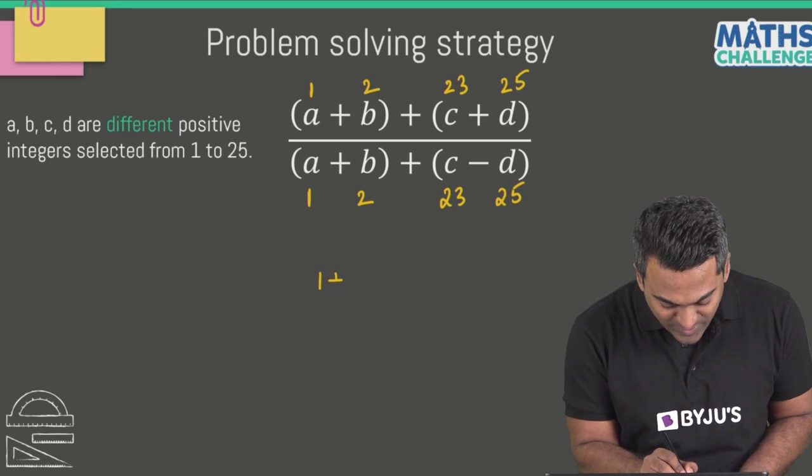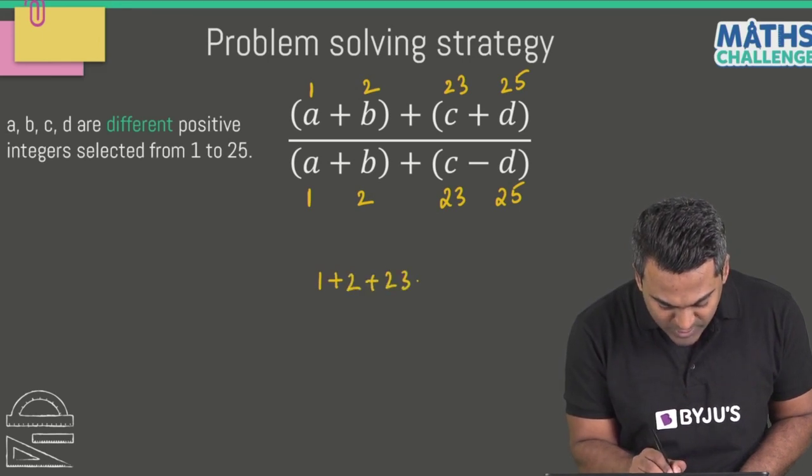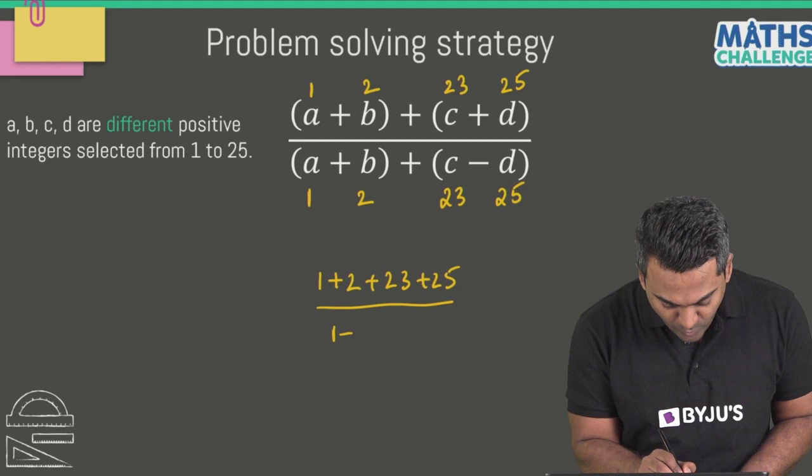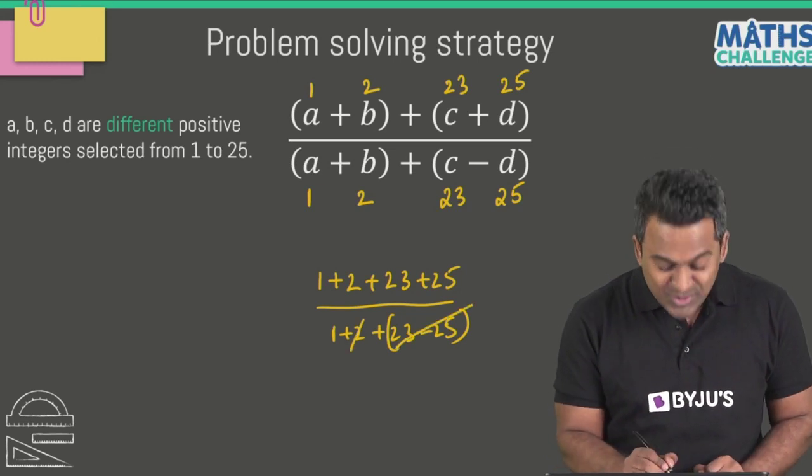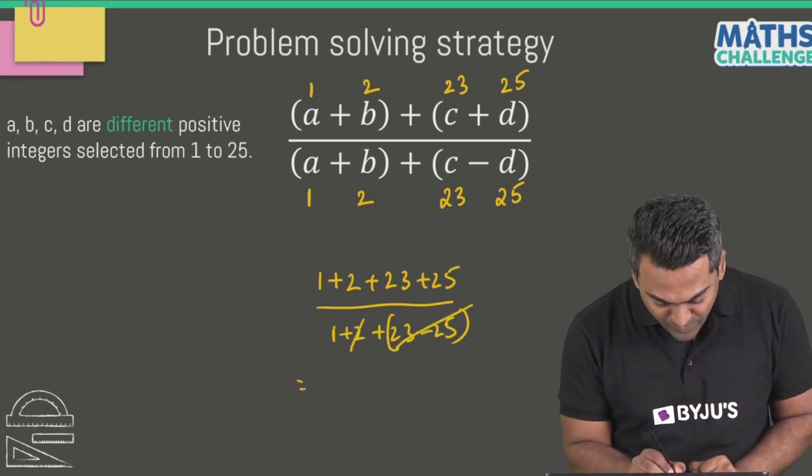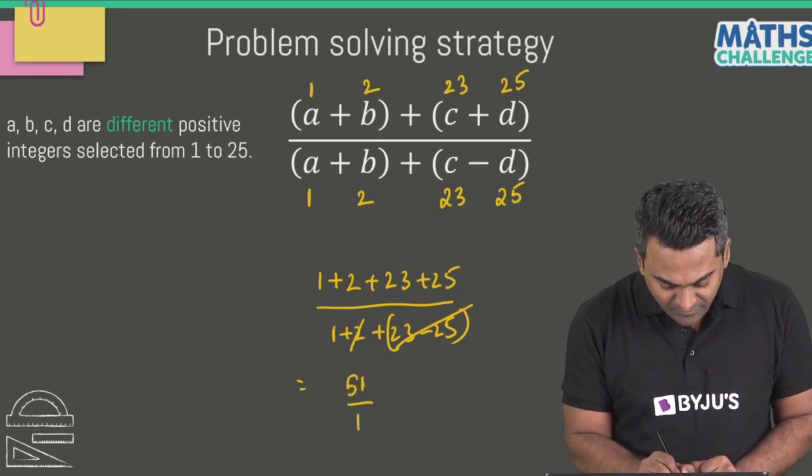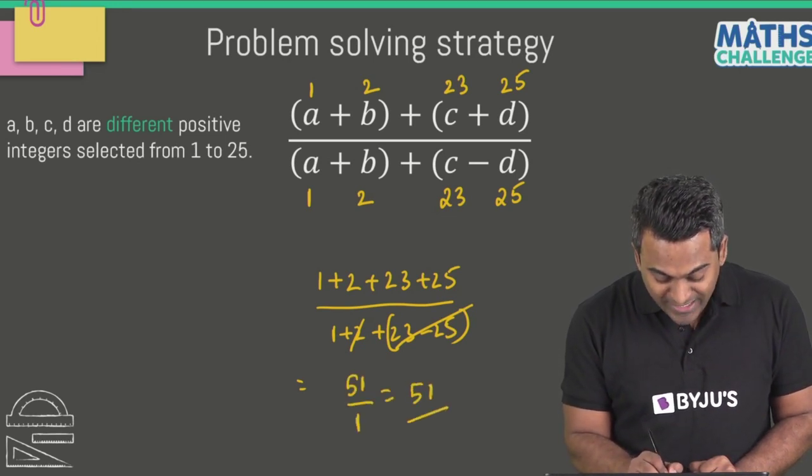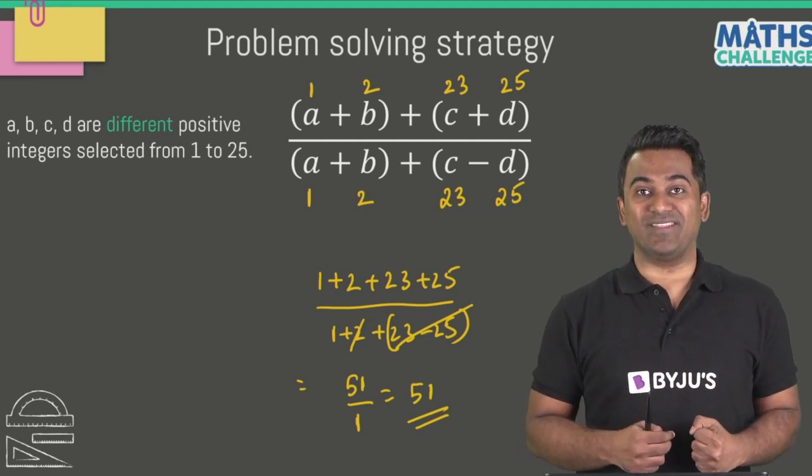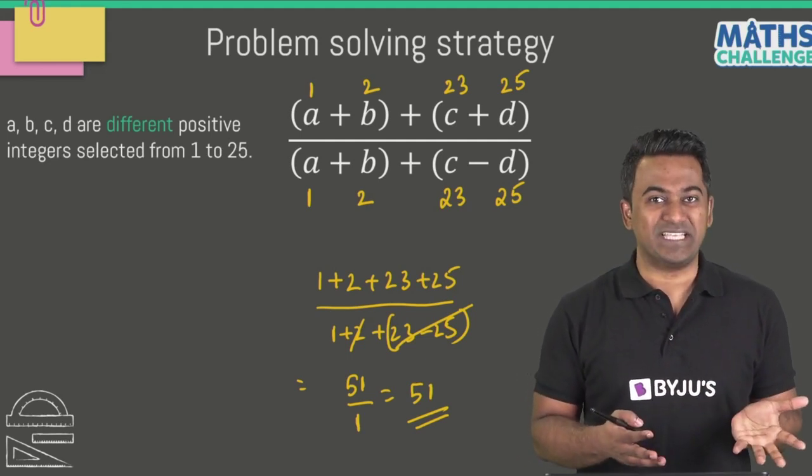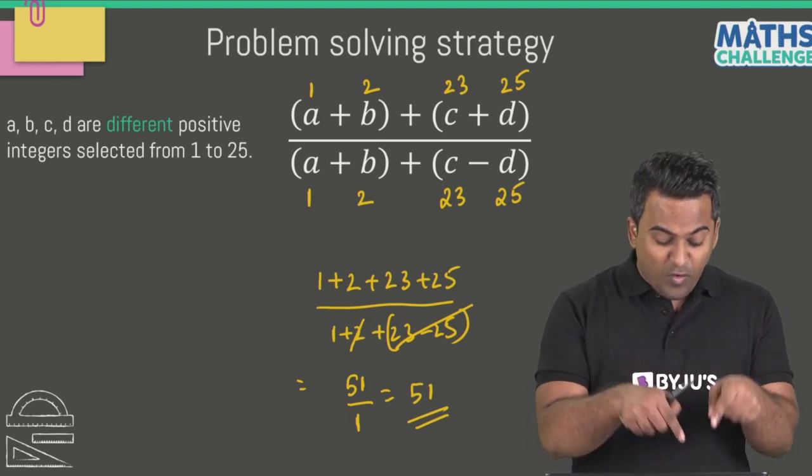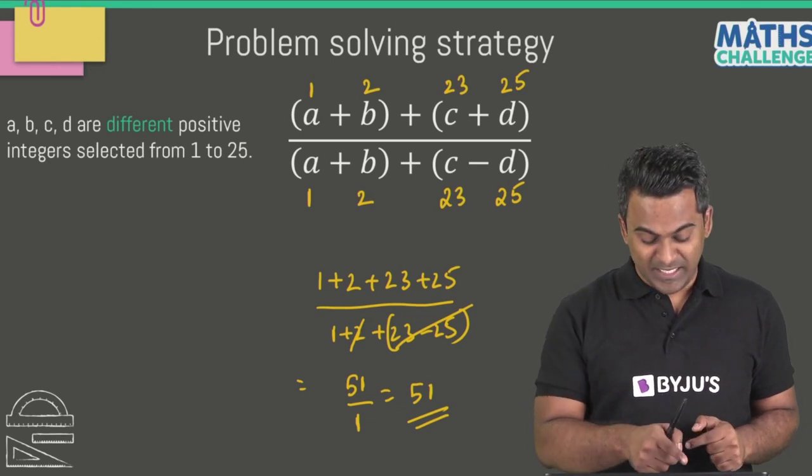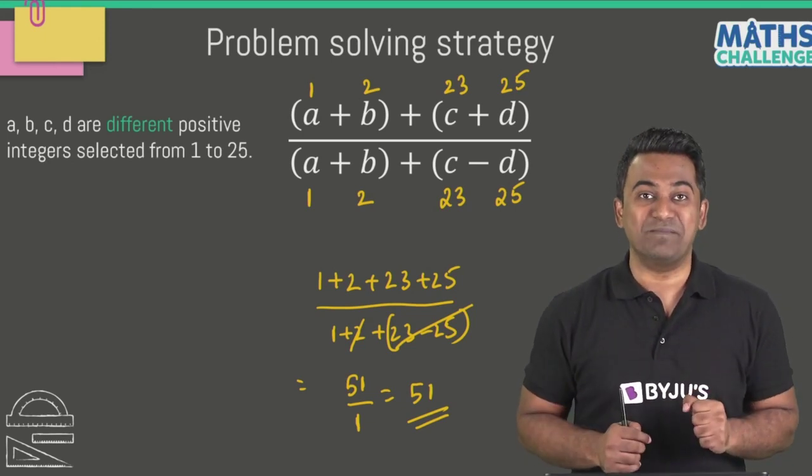Let's see what happens if I plug these values in. This is going to be 1 plus 2 plus 23 plus 25 divided by 1 plus 2 plus 23 minus 25. Now 23 minus 25 is minus 2, 3 minus 2 is 1. This is going to be 48, 50, 51 divided by 1. And there you go - it is quite bigger when you compare it with the last answer which was 26. So this right here is going to be the biggest possible value for this fraction.